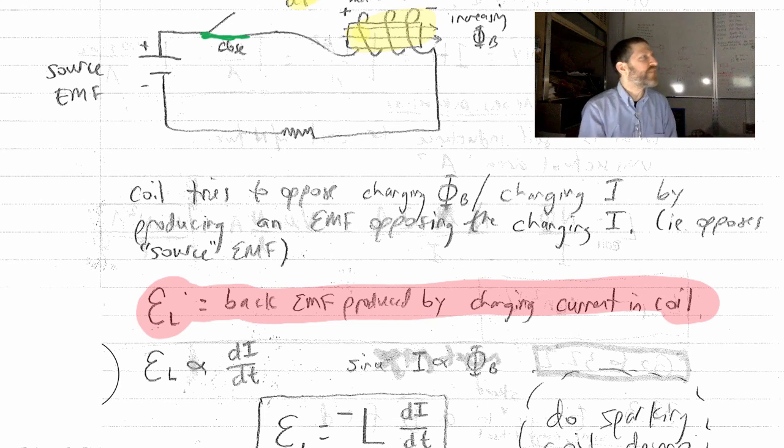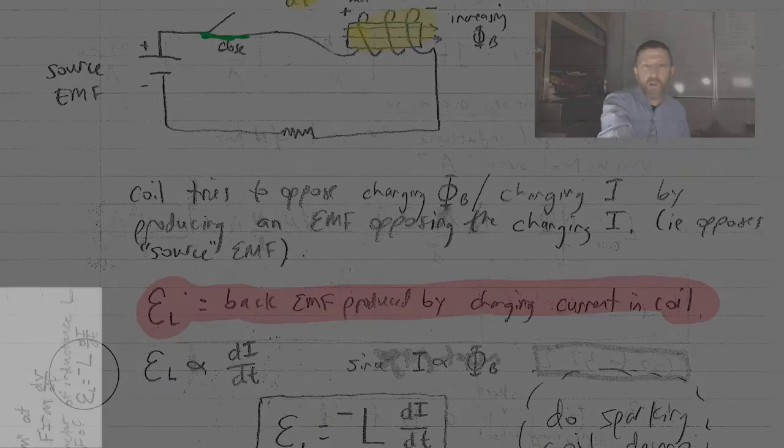The reason you get an EMF when you change the current in the coil, because changing the current in the coil produces a changing, you could say magnetic field or magnetic flux. It's because a changing current produces a changing magnetic field in our coil.